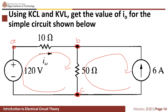Before solving the circuit, we need to label the voltages and currents of each branch. You can assume any voltage polarity or current direction for each branch. We will show later that the assumption does not matter, because we will still arrive at the same answer, as long as you are consistent with the positive and negative signs and with the passive sign convention.